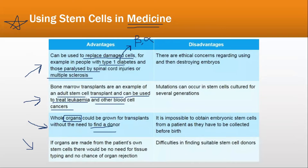Many people in need of organs face the problem that the donor organ does not match the recipient — for example, a liver donor whose blood type doesn't match. But if the organ develops from the patient's own stem cells, there would be no chance of organ rejection, because the body would recognize the organ as its own.